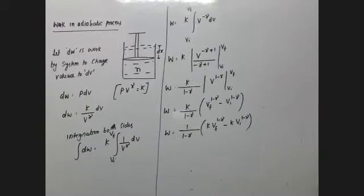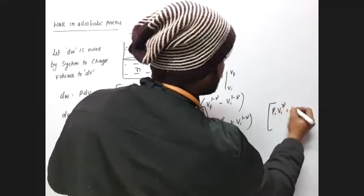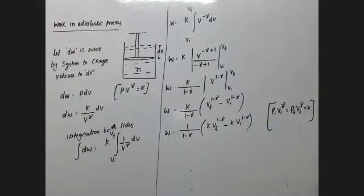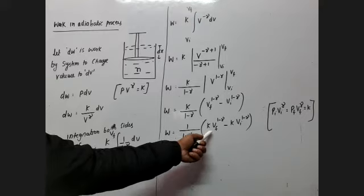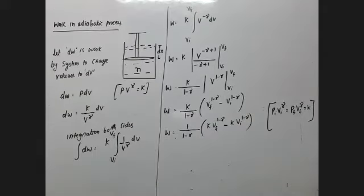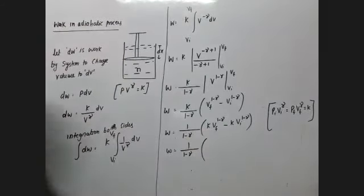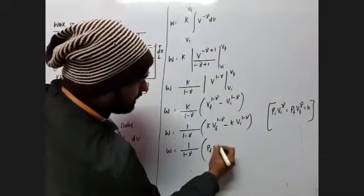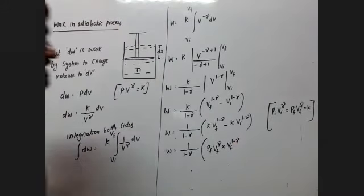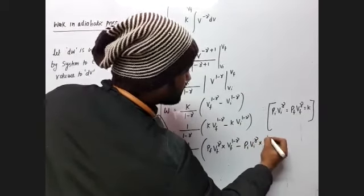Now substitute K back. Remember: P_initial · V_initial^γ = K and P_final · V_final^γ = K. So K · V_final^(1−γ) = P_final · V_final^γ · V_final^(1−γ) = P_final · V_final, and similarly K · V_initial^(1−γ) = P_initial · V_initial.